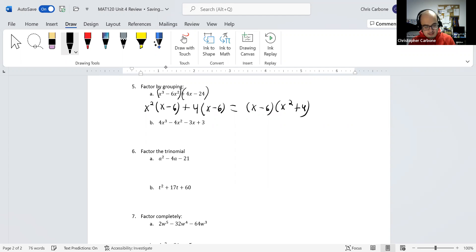For 4x cubed minus 4x squared minus 3x plus 3, we're just going to break these apart. For the 4x cubed minus 4x squared, we can take out a 4x squared times x minus 1.